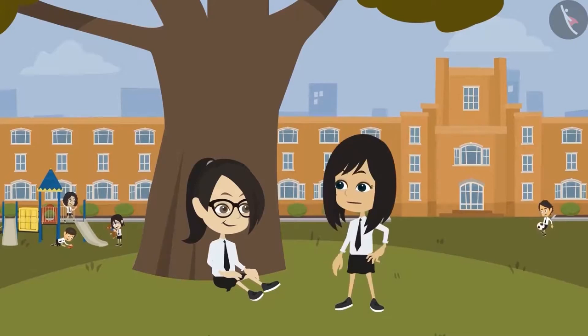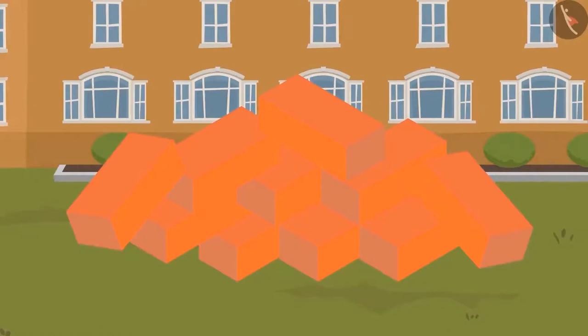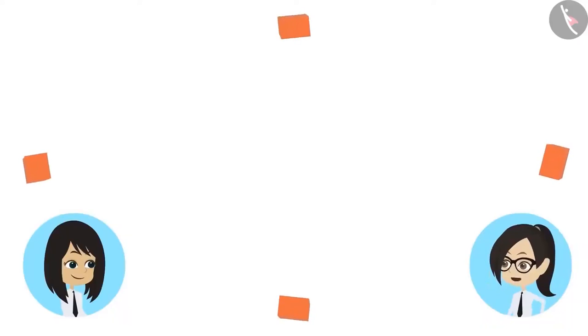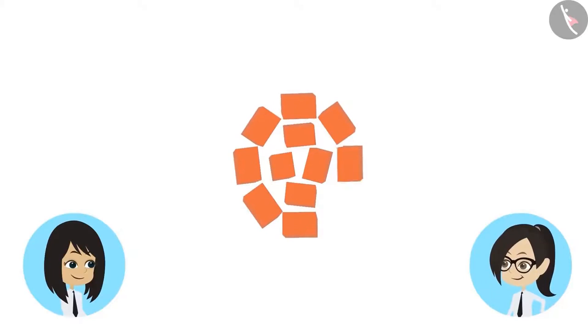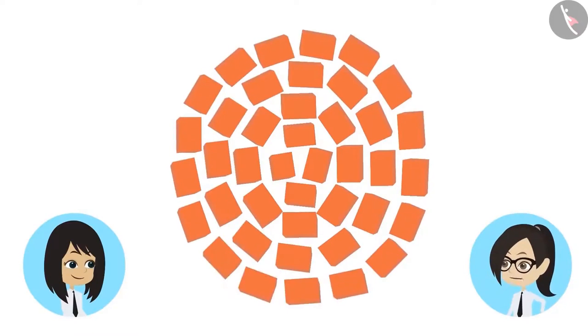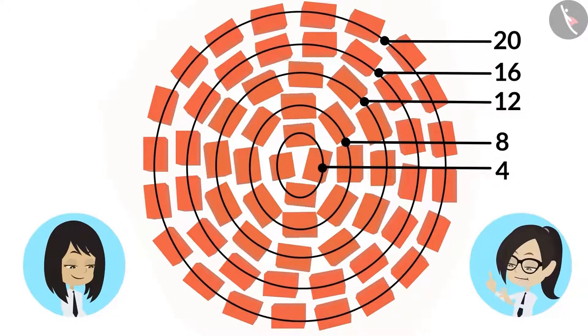For this, we will need some bricks. Here are few bricks. Let's make patterns using them. Let us first keep these 4 bricks like this. Now let's make a circle of bricks around them. Then make another circle of bricks around them. Then another and then another one. Look, it became a circular pattern.